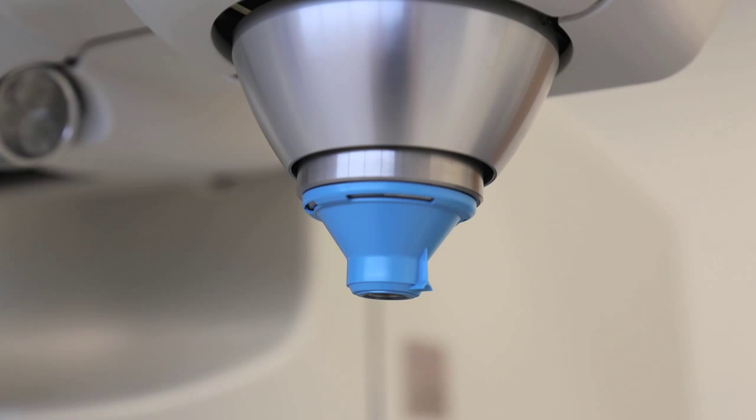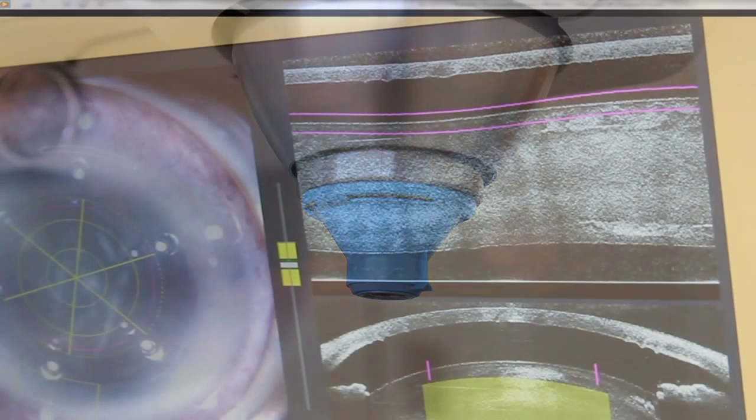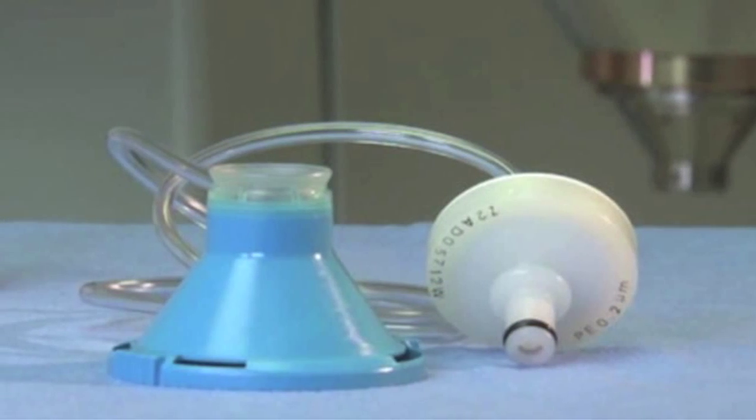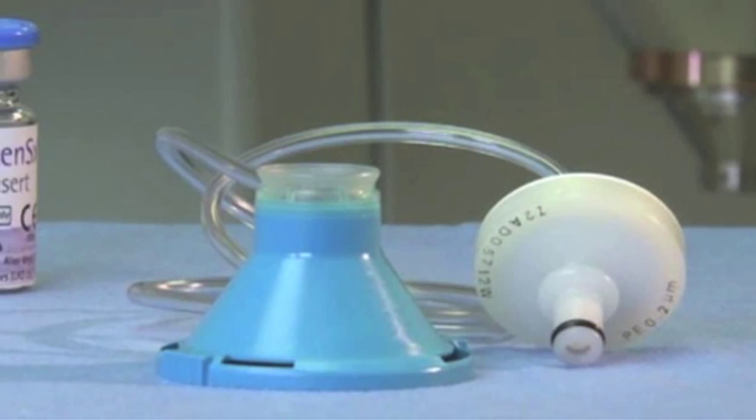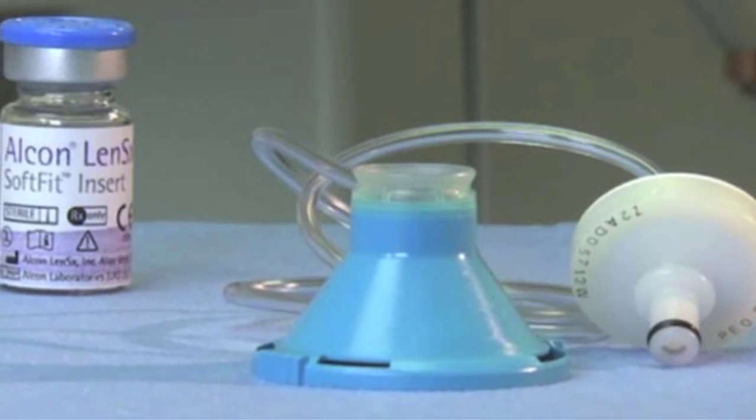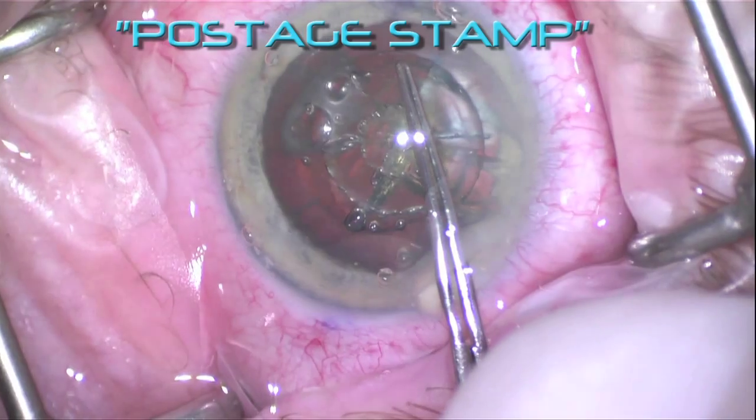While earlier versions of the Alcon LensX utilized a hard docking mechanism with corneal applanation and subsequent flattening with distortion of the cornea, with folds and ridges as previously shown, newer versions utilizing the soft fit interface are expected to decrease this distortion and have already been seen to improve the quality of the capsulotomy. Less corneal distortion simply means greater ability of the laser beam path to reach its intended target.